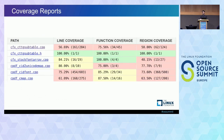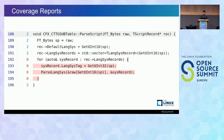Another nice feature is coverage reports. ClusterFuzz will show you which parts of your code are being fuzzed, allowing developers to alter their fuzzer or write new fuzzers to cover previously untested code. You can see what it looks like on a file level — part of a function is called, but not all of it.